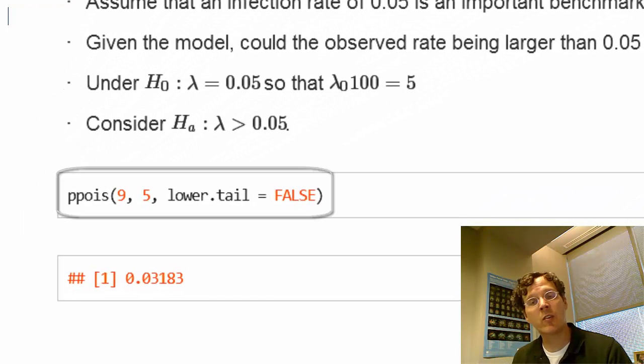So this is a Poisson probability. We want the upper tail. Remember this little quirk of R: if you want the upper tail and you're doing a discrete distribution, you actually have to drop the number down by 1.